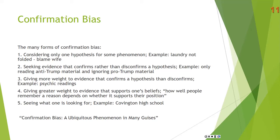For example, only reading anti-Trump material and ignoring pro-Trump material, or only reading pro-Trump material and avoiding anti-Trump material. Fox News is not going to be too critical of Trump. If you're a conservative, you might tend to watch Fox News and ignore CNN, the New York Times, and the Washington Post. The New York Times is often not going to say when Trump did something good — they'll ignore it or find some negative spin on it. If you're a liberal, you might find yourself reading the New York Times or watching CNN and ignoring the Wall Street Journal, National Review, and Fox News. This is seeking evidence that confirms your hypothesis and ignoring evidence that disconfirms it.